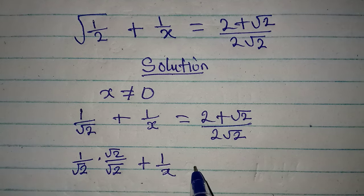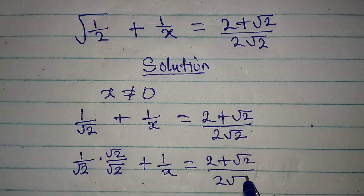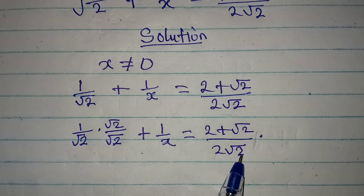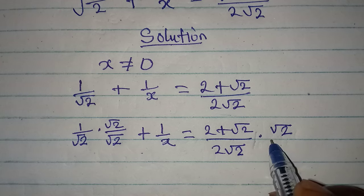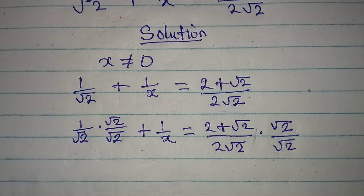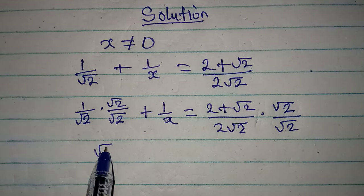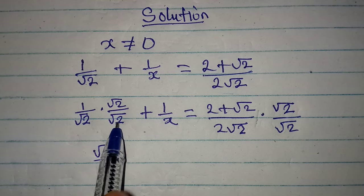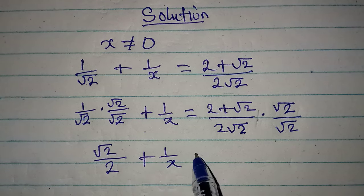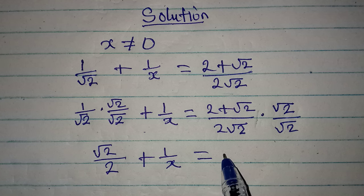I have rationalized the first term, then plus 1 over x equals 2 plus square root of 2 over 2 root 2. Now I want to rationalize the right-hand side — because of the square root of 2, I'll multiply by root 2 over root 2. Remember this hasn't changed anything because root 2 over root 2 is 1. So 1 times root 2 gives us root 2, over root 2 times root 2 which gives us 2, since square root of 4 is 2.